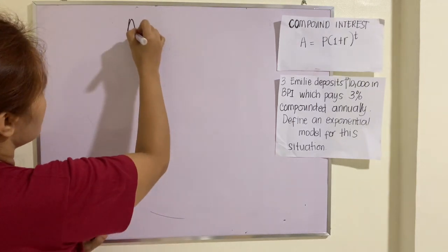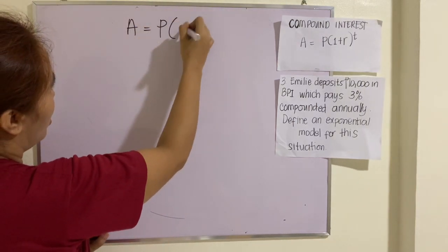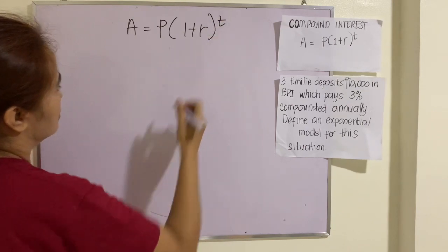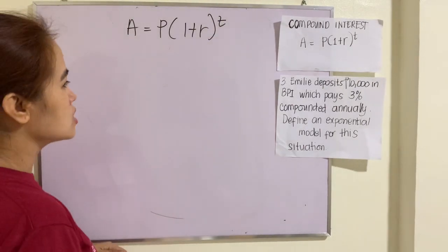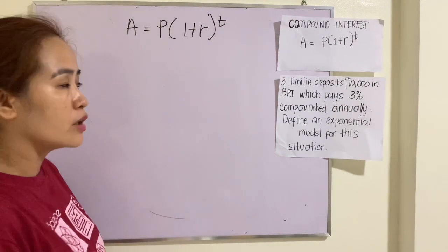So let's define an exponential model for this situation. So see, this is A equals P times 1 plus R raised to T. So we are just asked to give an exponential model for this.